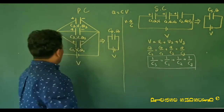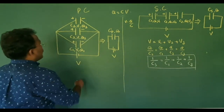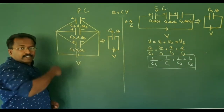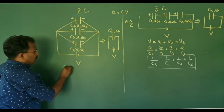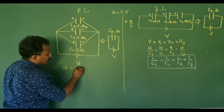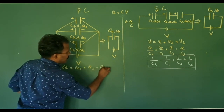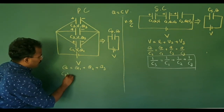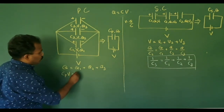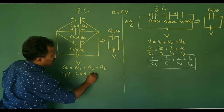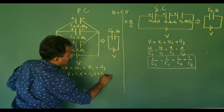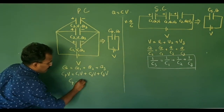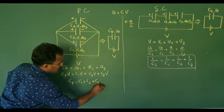For the parallel combination, the total charge Q equals Q1 plus Q2 plus Q3. Substituting Q equals CV, we get: CP times V equals C1 times V plus C2 times V plus C3 times V. All V's cancel out, giving us: CP equals C1 plus C2 plus C3.